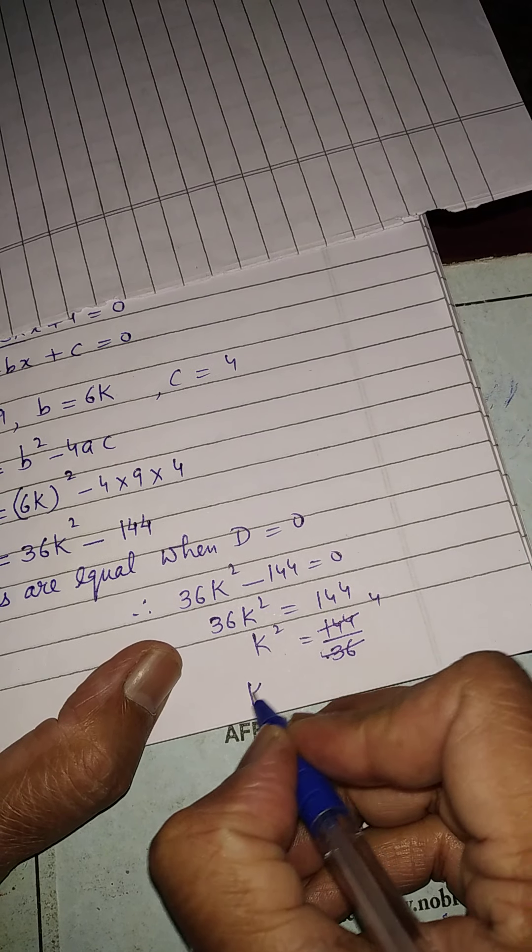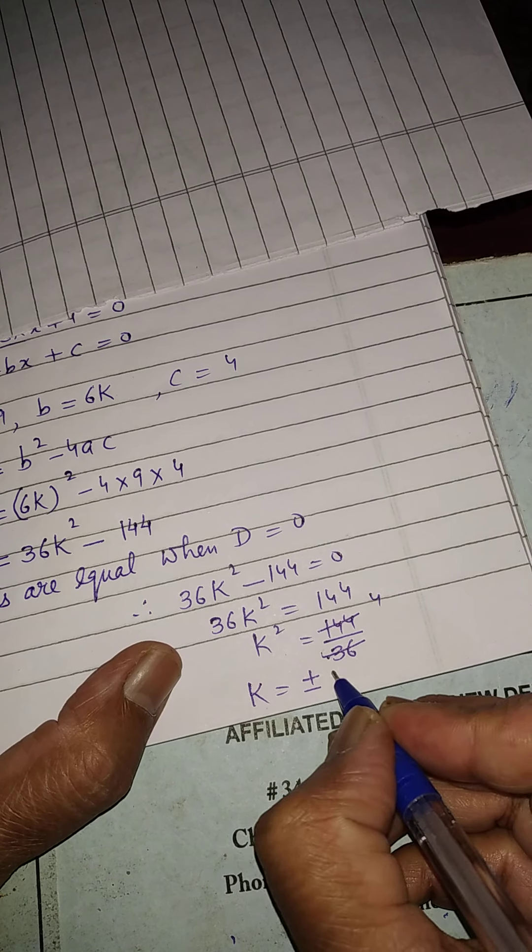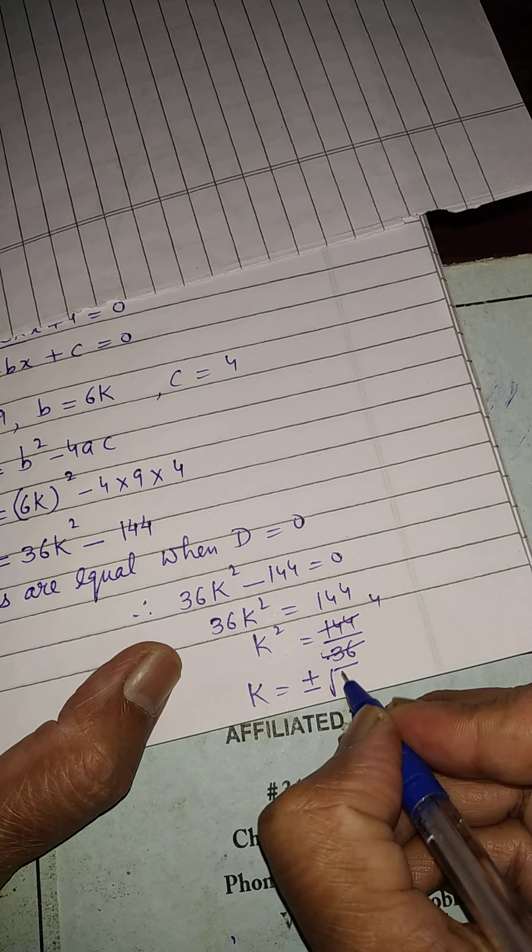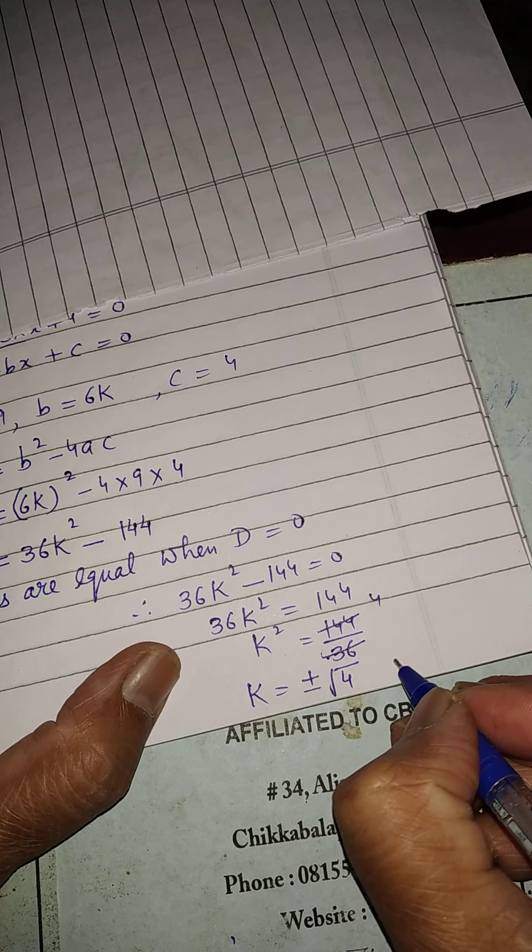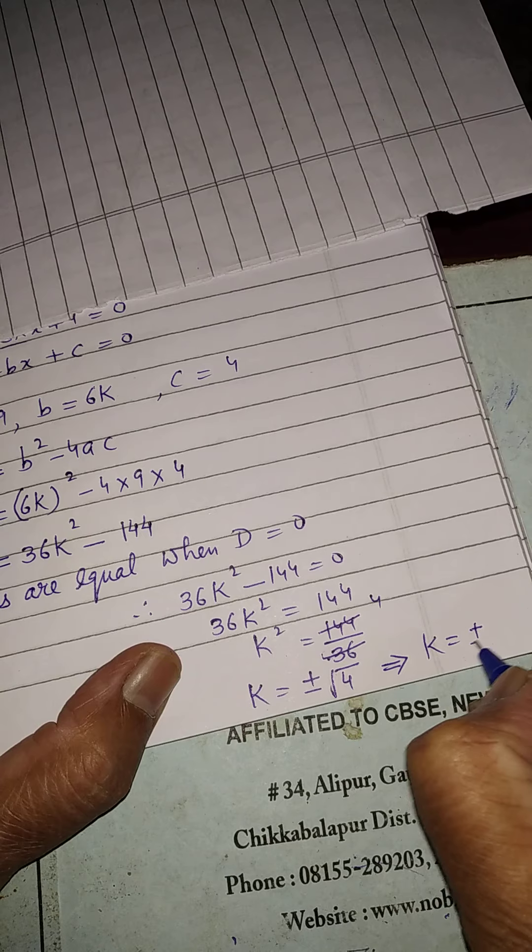Now, we want to find the value of k. So, this square will become the square root and plus minus both sign will come. So, that is square root of 4. So, that will be equal to k will be equal to plus minus 2.